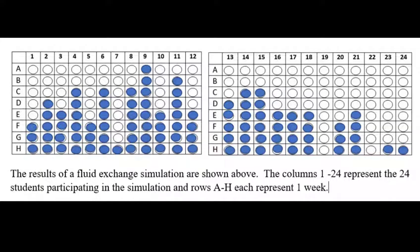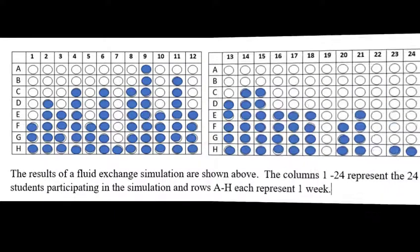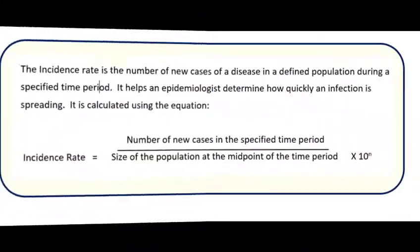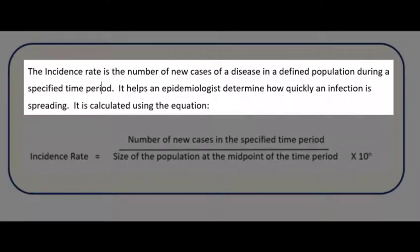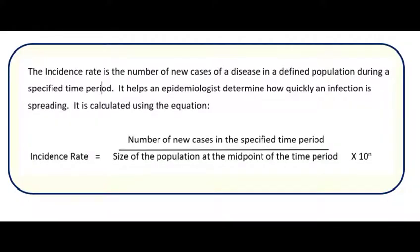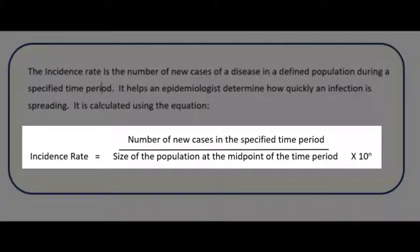These results are then used to explain and calculate incidence and prevalence. The incidence is the number of new cases of a disease in a defined population during a specified time. This number helps us determine how quickly an infection is spreading. The calculation is number of new cases during that specified time period divided by the size of the population at the midpoint of the time period.